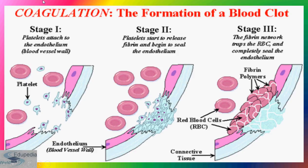Coagulation involves three stages: platelets get attached to the endothelium; platelets start to release fibrin and begin to seal the endothelium; and the fibrin network traps the RBCs and completely seals the endothelium. This is how the formation of a blood clot takes place.